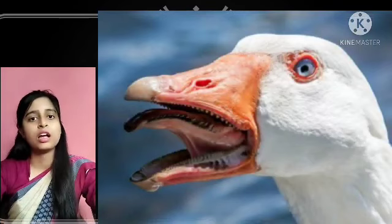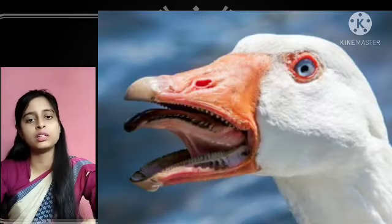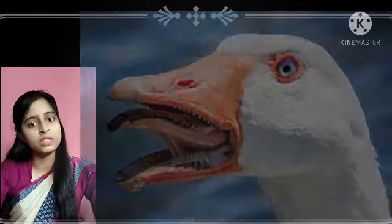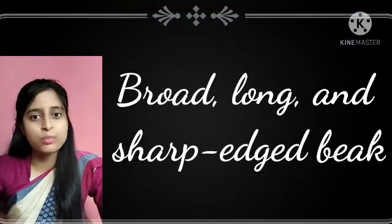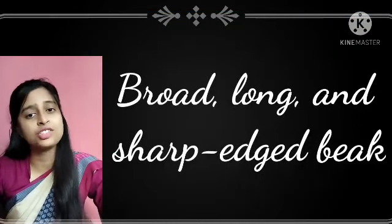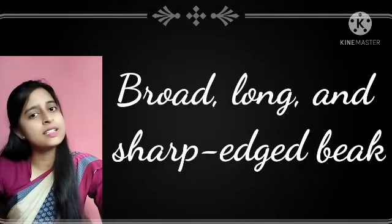Ducks and geese take in muddy water along with insects, worms, small fish, and small water plants. They have a comb-like structure in their beak to drain out the muddy water, as you can see on your screen. Now, some birds such as pelicans have a broad, long, and sharp beak to catch fish, crabs, and frogs.